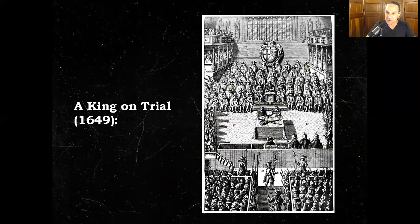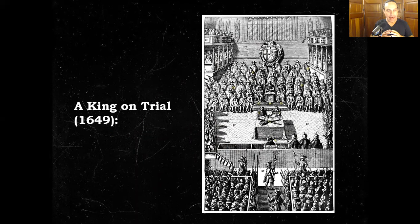In the end, the Scottish capture Charles once again and hand him over to Parliament. He is put on trial for treason. By this time, Cromwell has gotten rid of anyone in Parliament who isn't on his side, so we know the answer: Charles is found guilty of treason. Like any traitor, Charles is sentenced to die. January 30th, 1649, King Charles meets his punishment.